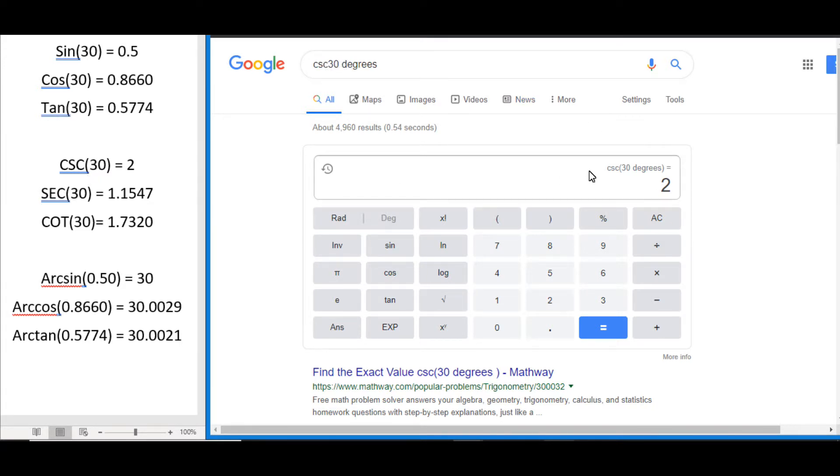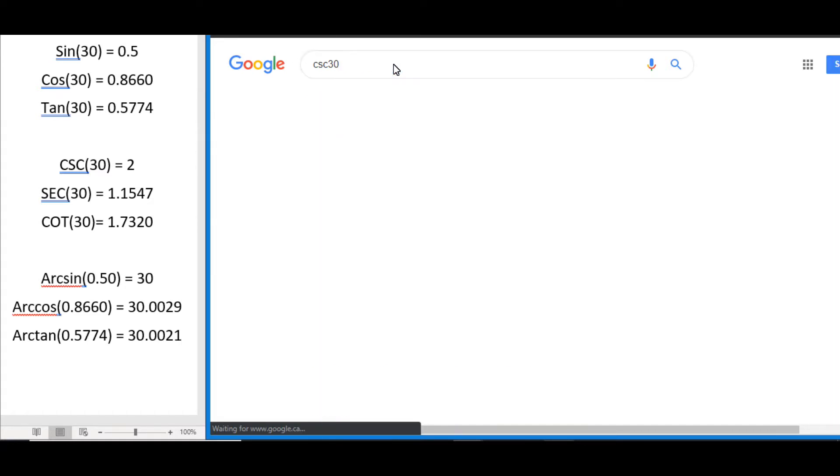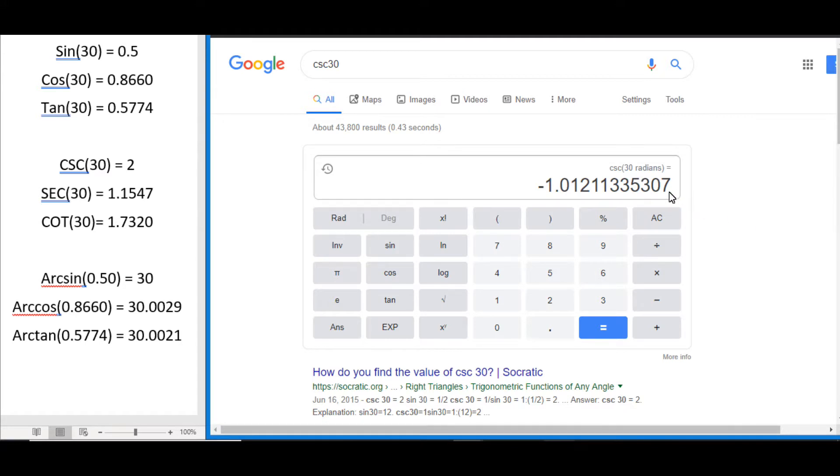Csc of 30 equals 2. You can see if we don't add the degrees we get a different answer. This is the result for radians but in our example that's not what we're looking for.